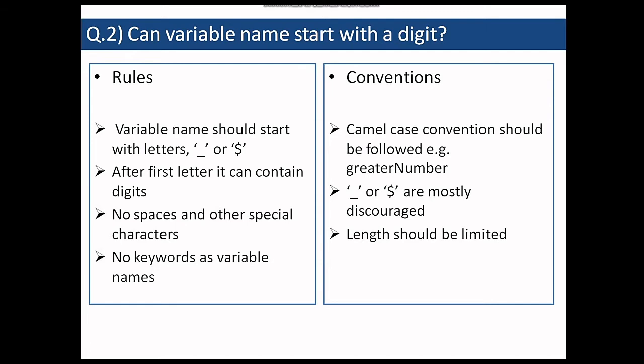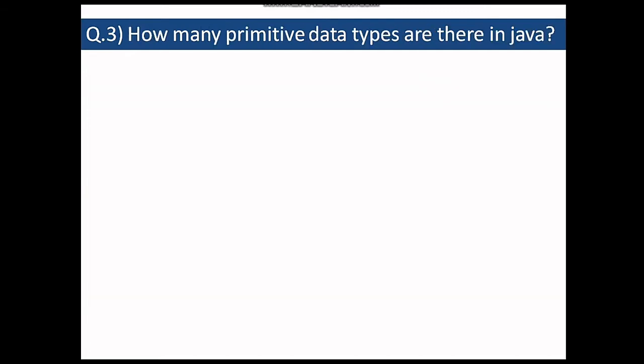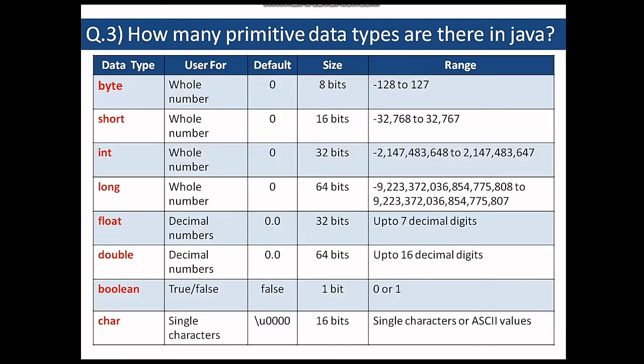So the next question is how many primitive data types are in Java? So we have already studied primitive data types and we know there are eight data types in Java, with each having its own size and range and each having its own purpose, such as integer is used for whole numbers and characters is for characters, etc. So we have a detailed video on primitive data types. If you want to know more, please click on the link given in the description box below for primitive data types.